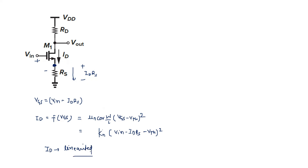Previously, ID had a purely quadratic relation with VGS. But now, due to this degeneration resistor, ID has a linear relation. This is the degeneration process, where we obtain a voltage drop across RS.